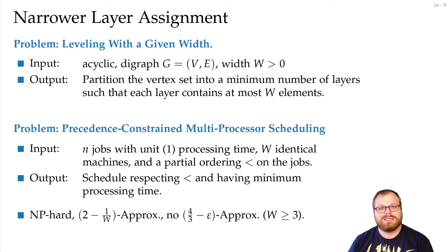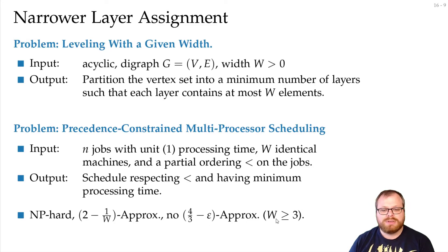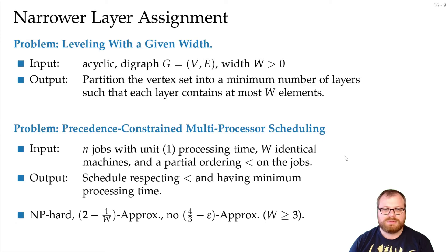On the other hand, it is known that there is no (4/3 - ε) approximation for at least 3 machines. So unless P equals NP, there is no polynomial-time solution that gets closer than 4/3 times the optimum.